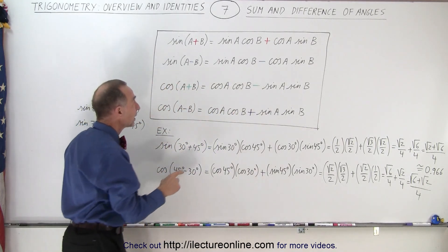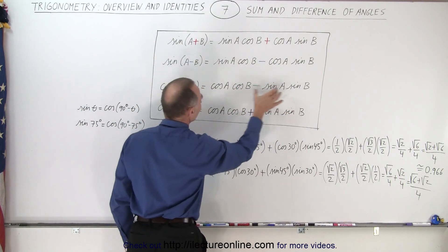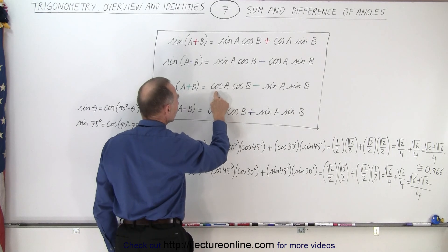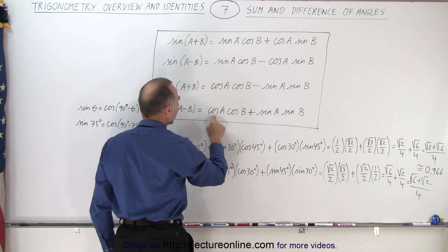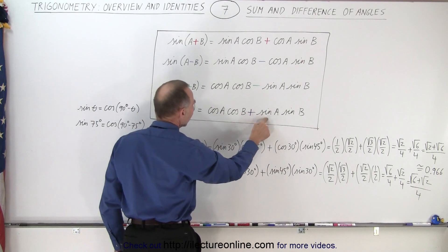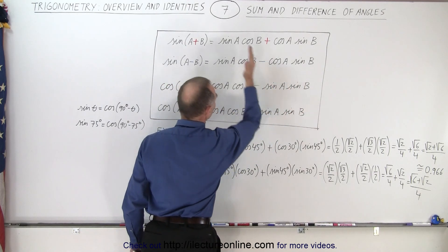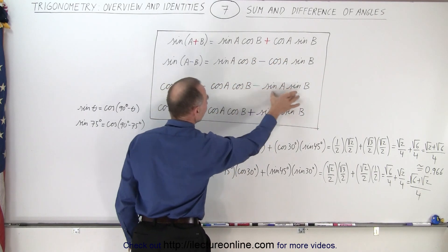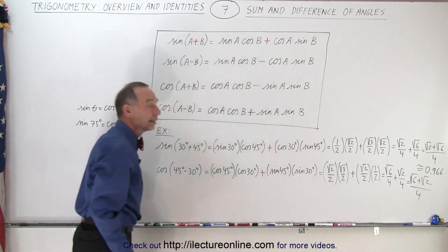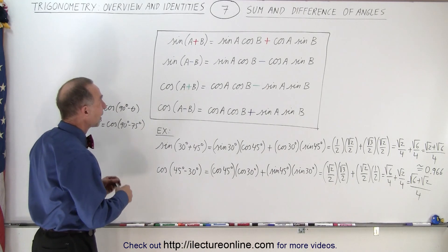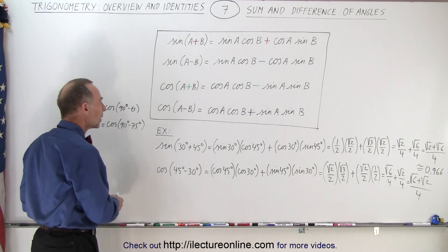Also notice that for cosine we have the two cosines and the two sines together: cosA times cosB minus sinA times sinB, and cosA times cosB plus sinA times sinB. The angles are still first angle, second angle, just like before, but here the cosines are together and the sines are together, whereas for sine we had alternating sine-cosine, cosine-sine. So those are the four identities: sine of a plus b, sine of a minus b, cosine of a plus b, and cosine of a minus b.